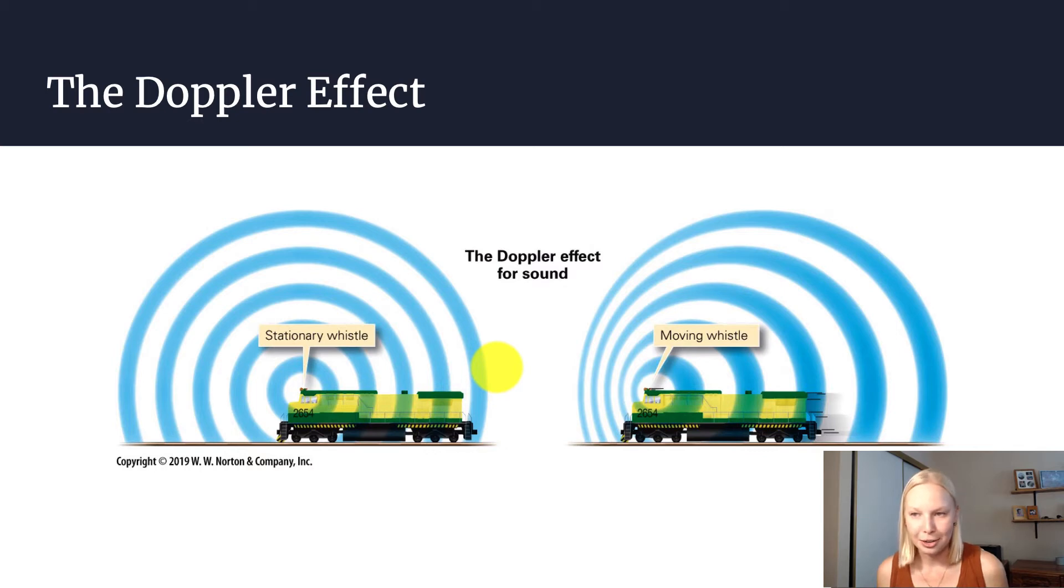If that train were to stand still, you might just hear that tone stay the same. What's happening is, as the train is moving towards you, the sound waves are actually being compressed, and it gives the impression that the frequency of those waves is higher.